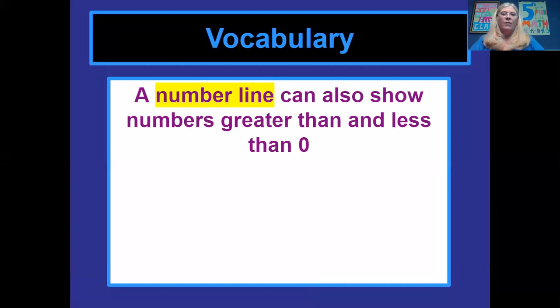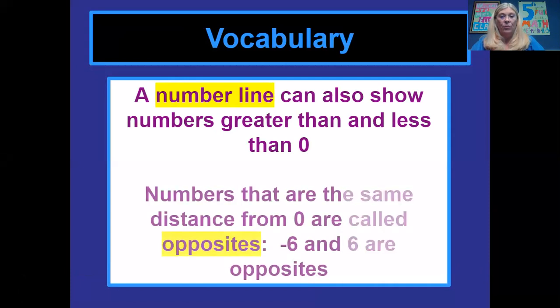So a number line is a really great way to show numbers that are greater than and less than zero. And numbers that are the same distance from zero are called opposites. So we're starting today when we start talking about integers that means we are expanding our knowledge of the numbers and digits from positive numbers to also include negative numbers. You have seen negative numbers before. You see them on a thermometer when the temperature goes below zero it goes into negative numbers.